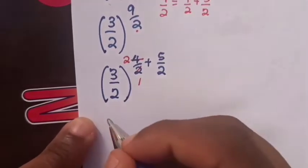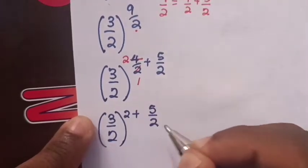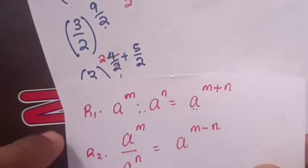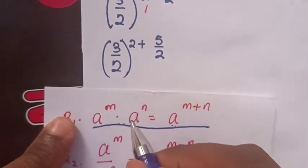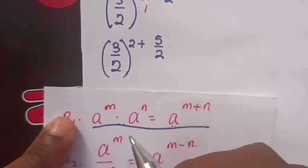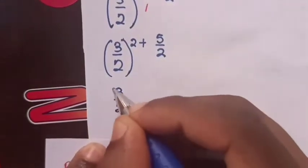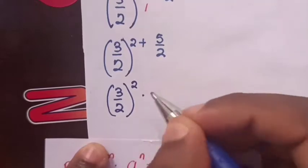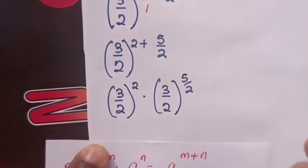So our expression will be 3 over 2 to the bracket power of 2 plus 5 over 2. We apply the rule: A to the power m times A to the power n equals A to the power m plus n. So our expression becomes 3 over 2 bracket power 2 times 3 over 2 bracket power 5 over 2.